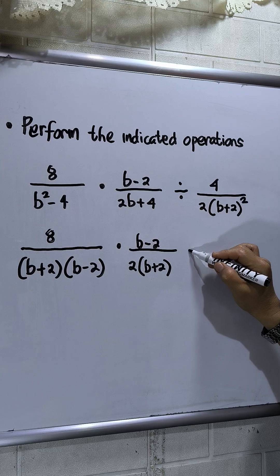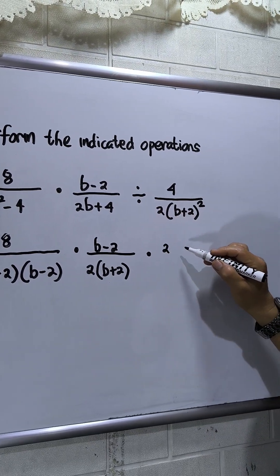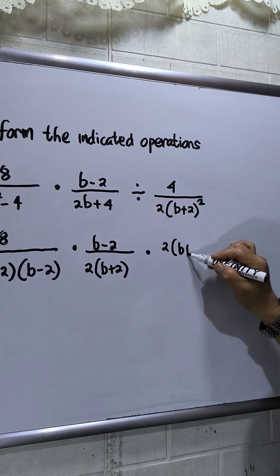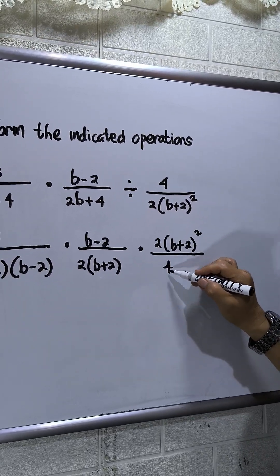Then I'll change the operation to multiplication and flip the fraction. So this will be the numerator: 2 times open parenthesis b plus 2 close parenthesis squared, over 4.